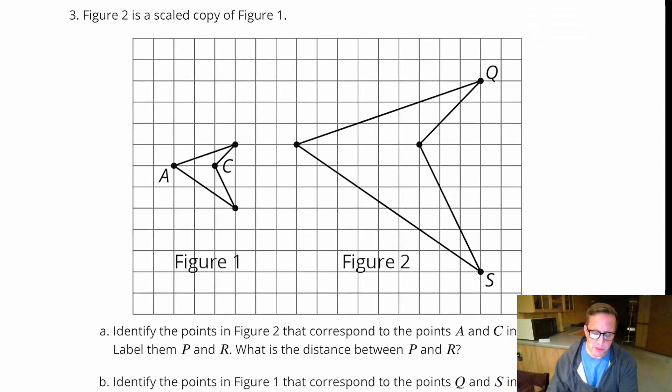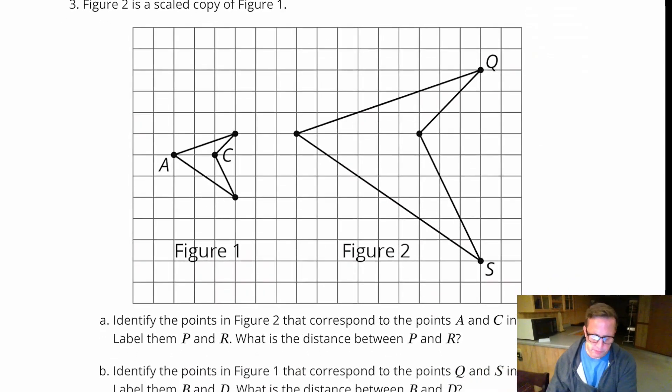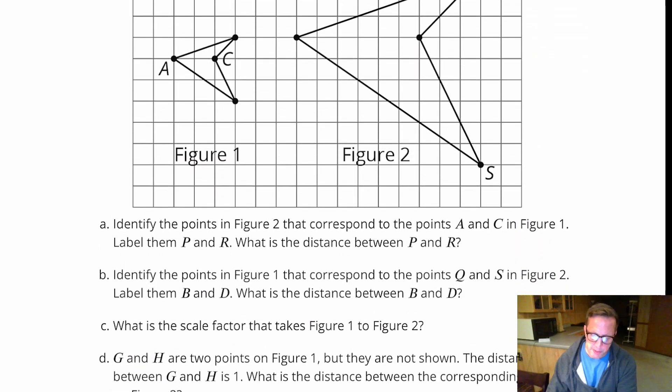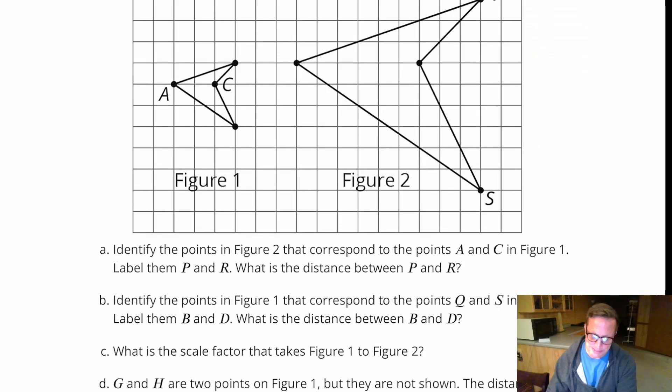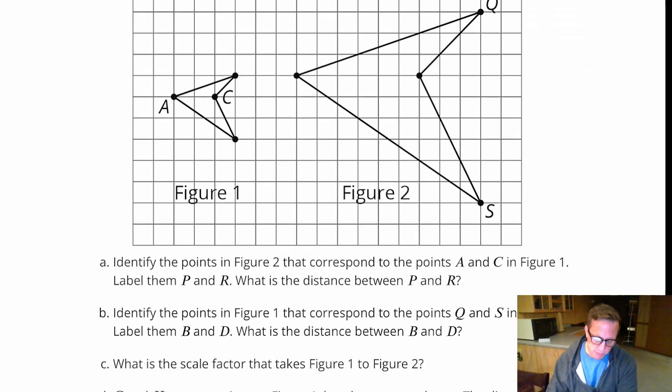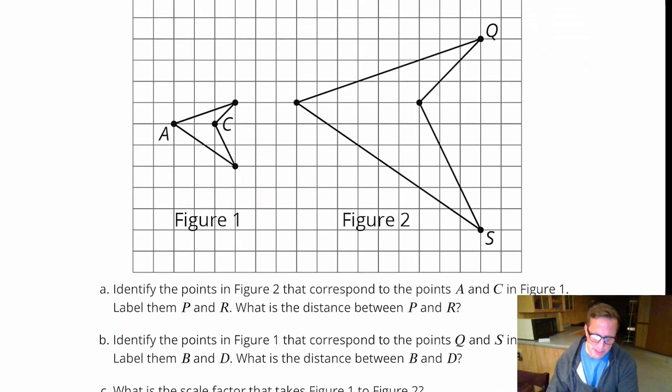For number two, it says figure two is a scaled copy of figure one. For part A, identify the points in the figure that correspond to the points A and C in figure one. Label them P and R.